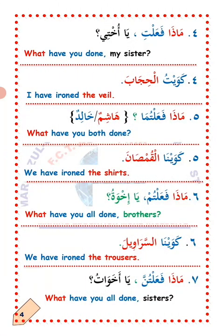Arba'a, number four. Maza fa'alati ya ukhti? — What have you done, my sister? Answer: Kawaitu al-hijab — I have ironed the veil.